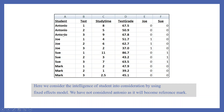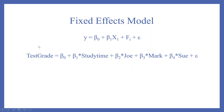We have not considered one student as they will become the reference category. You can choose the reference category according to theory or literature available. So the fixed effects model is: y = beta0 + beta1*x1 + phi + error term. That is: test grade = beta0 + beta1*(study time) + beta2*(Joe) + beta3*(Mark) + beta4. The estimates for the omitted student will be captured from the constant beta0.